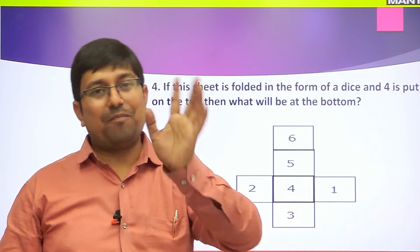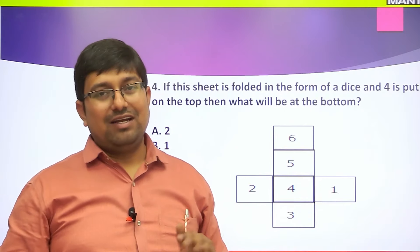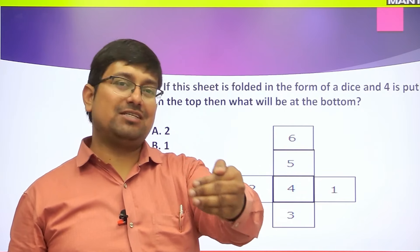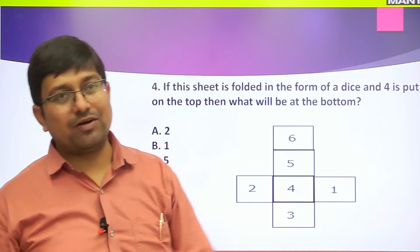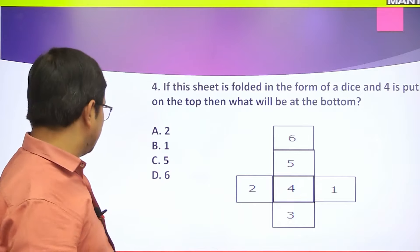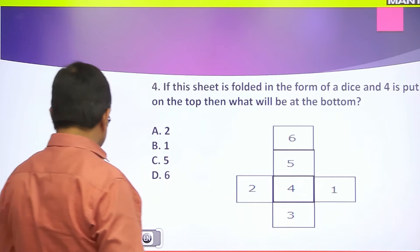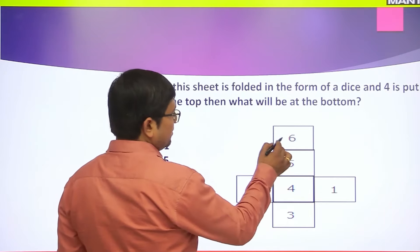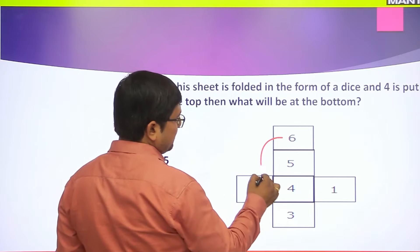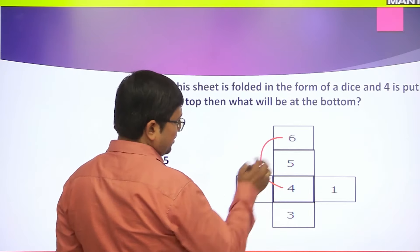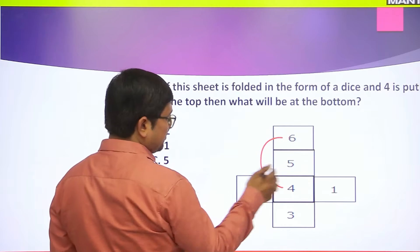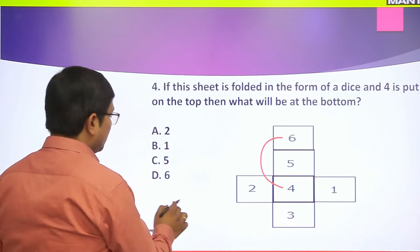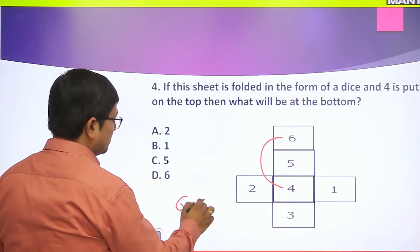When you make a dice from the net, the faces at a gap of one - that is, alternating faces - are opposite. So skip one face: 6, skip, 4 → six opposite is four. Then: 5, skip, 3 → five opposite is three. And: 2, skip, 1 → two opposite is one. So directly from the open form: six opposite four, five opposite three, two opposite one.